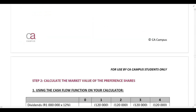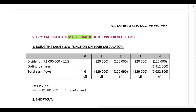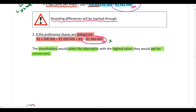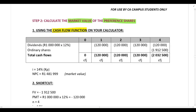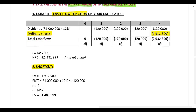In step two, we calculate the market value of the preference shares using the cash flow function on your financial calculator. In four years' time, the shareholders will select conversion — that is the highest value. So R1,912,500 is the future value in your calculation. You show this as an outflow in column four of the cash flow function, or if using the shortcut, that is your future value.